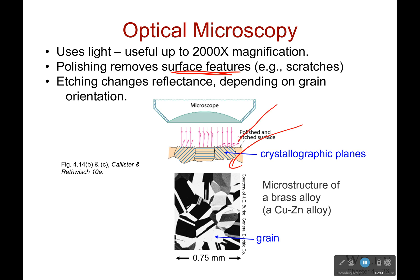Some grains are very very dark because the light bounces away from that area due to how they've been etched and the angle of their surface. Some are going to be fairly faint — you'll see a bit less color — because some of the light bounced away but not all of it. And finally, some are going to be very very bright because they have the same orientation, and even when etched it didn't matter — their particular crystallographic planes bounced the light back.